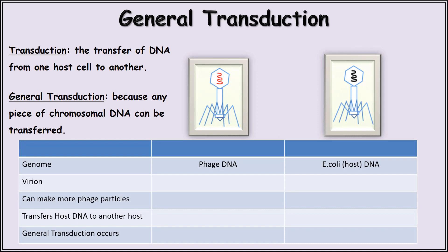Let's compare the two bacteriophage: the one with viral phage DNA versus the one that contains bacterial host DNA. A virion is a virus that's capable of infecting a host cell. Both phages are infectious and therefore they are both virions. However, only the phage DNA has the genes necessary to instruct the host cell to make more phage particles. Thus, the phage with the host DNA lacks these genes and phage production ceases. Only the phage with the host DNA can transfer host DNA. General transduction only occurs with newly made phage particles that transfer random pieces of host DNA to the new host cell.